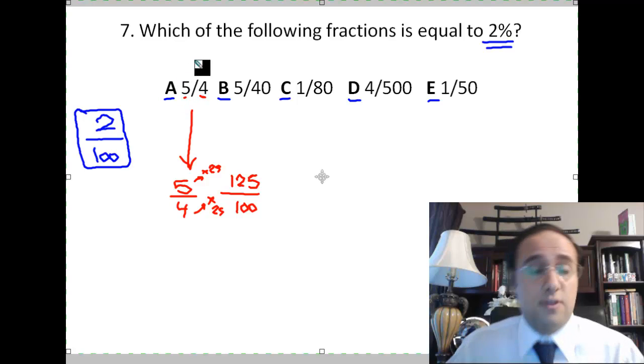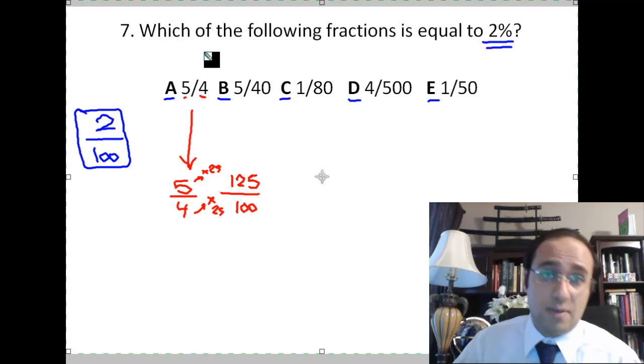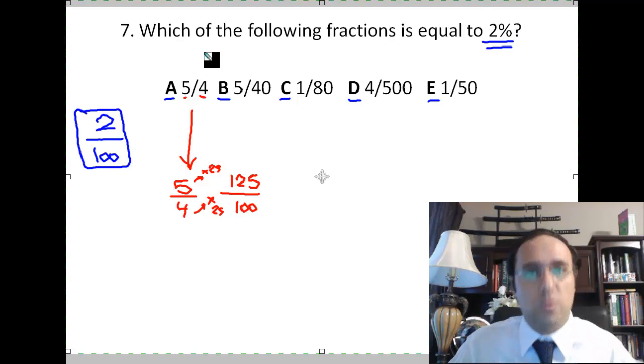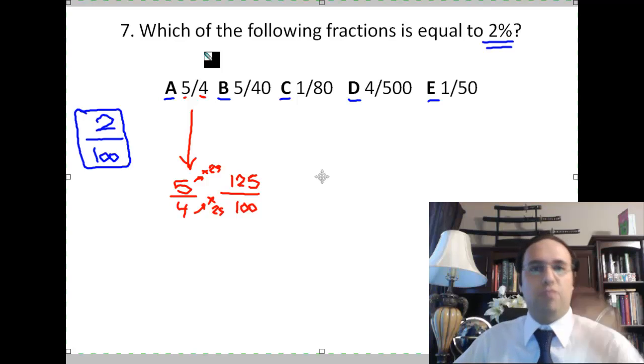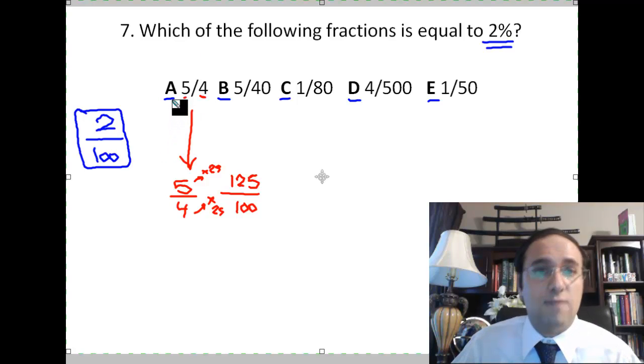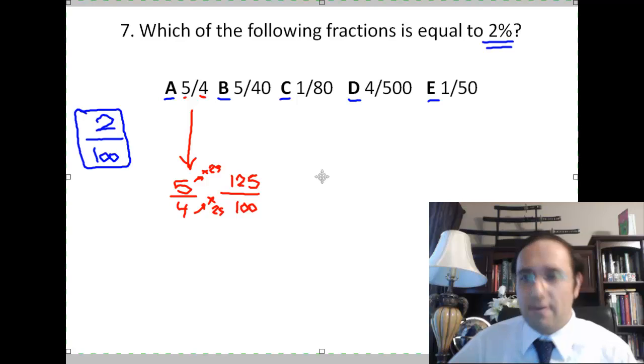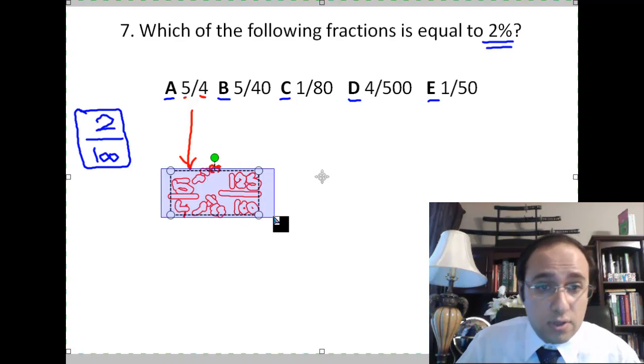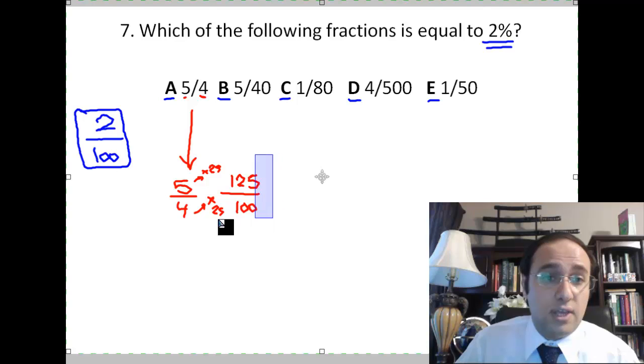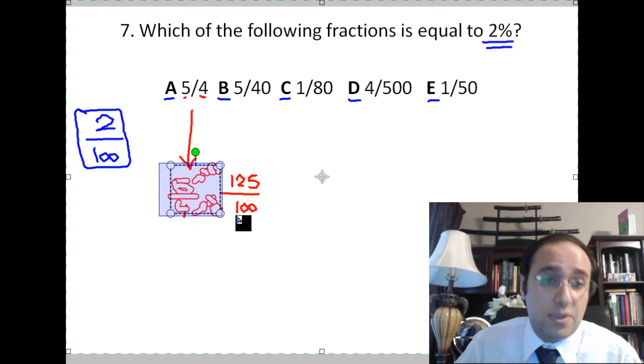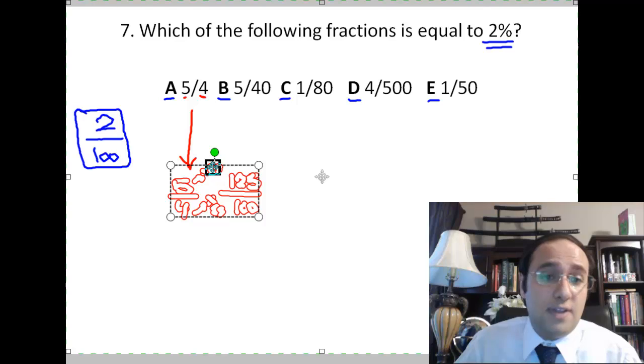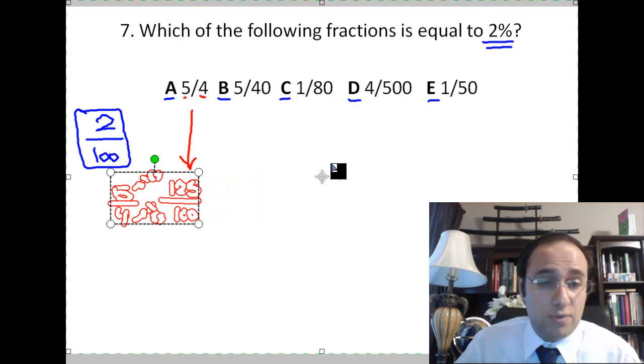Because here, the numerator is bigger than the denominator. And when the numerator is bigger than the denominator, that means that the answer is going to be more than 100 percent. If it were 4 over 4, that's 100 percent. 5 over 5, that's 100 percent. So if the numerator is bigger than the denominator, like here 5 over 4, that means the answer is going to be more than 100 percent. And I'm asking for 2 percent, so definitely A is not the answer.